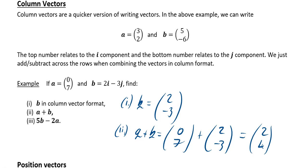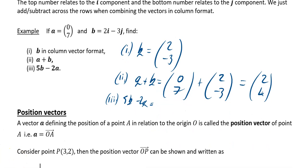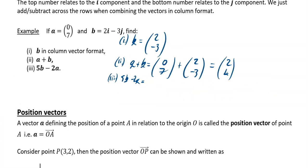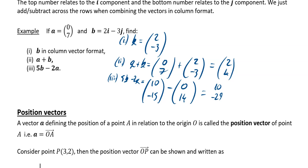For part 3, you've got to find 5b minus 2a. So 5b is going to be 5 times b, which is (10, -15). And minus 2a: 2 times a is (0, 14). So when you work that out, 10 minus 0 is 10, and minus 15 minus 14 is minus 29. So the answer is the column vector (10, -29).